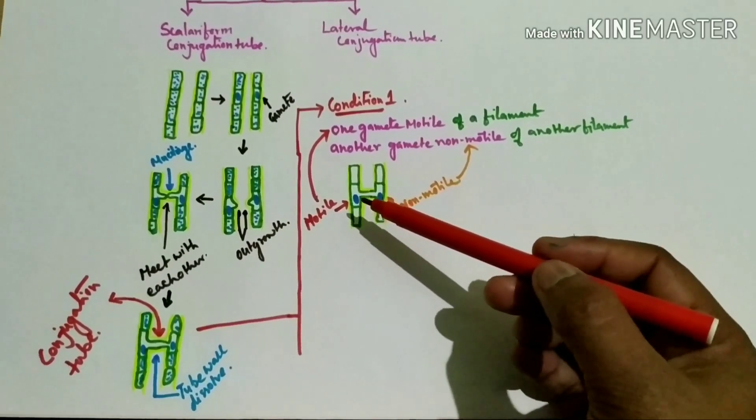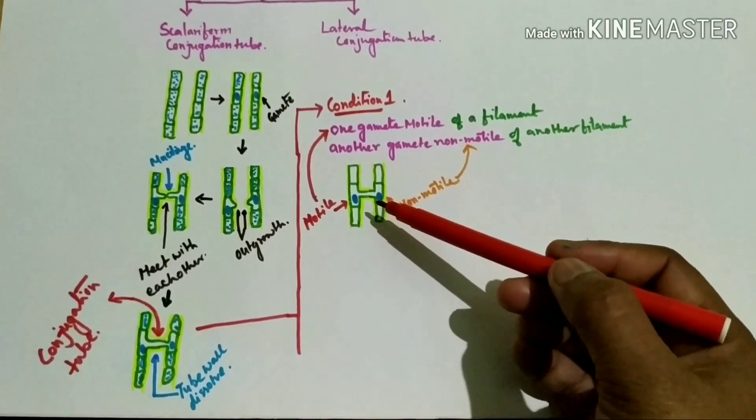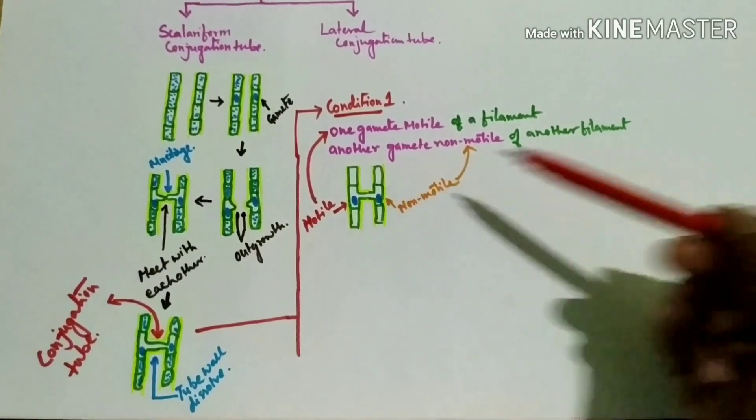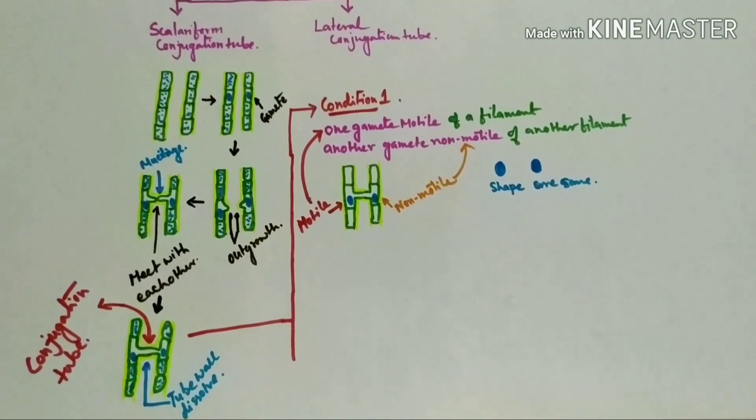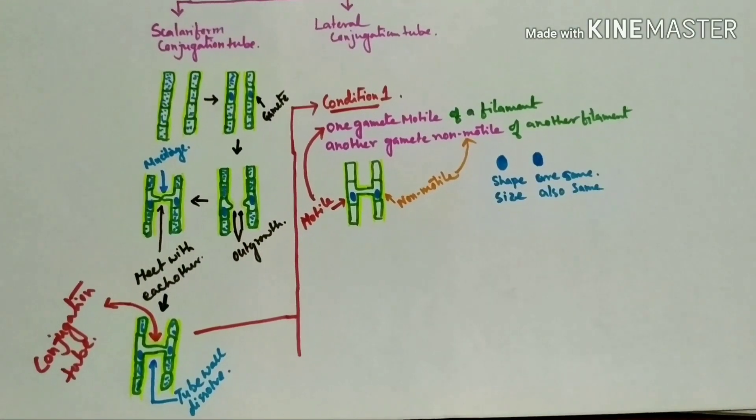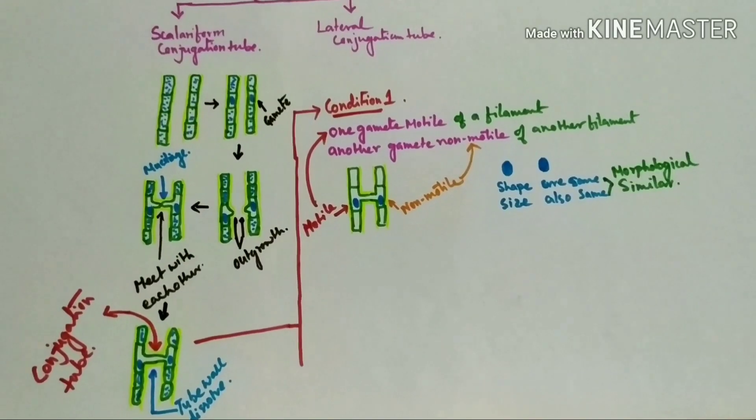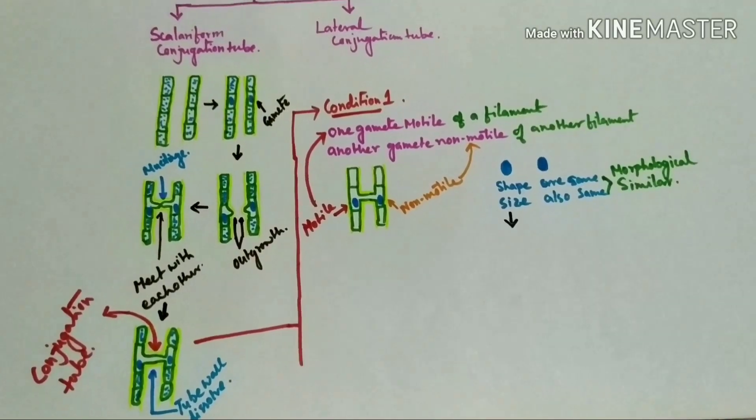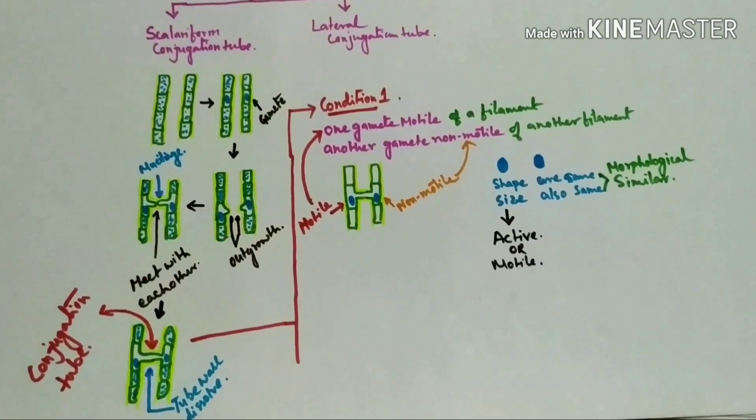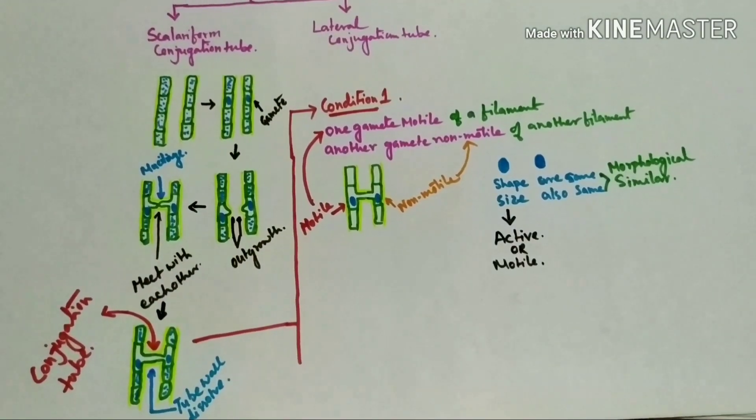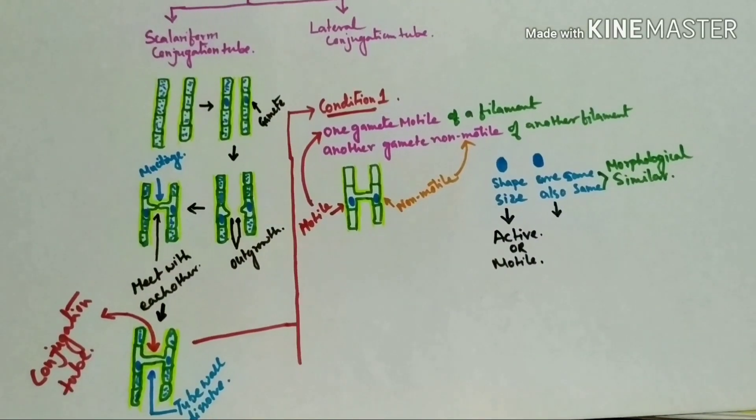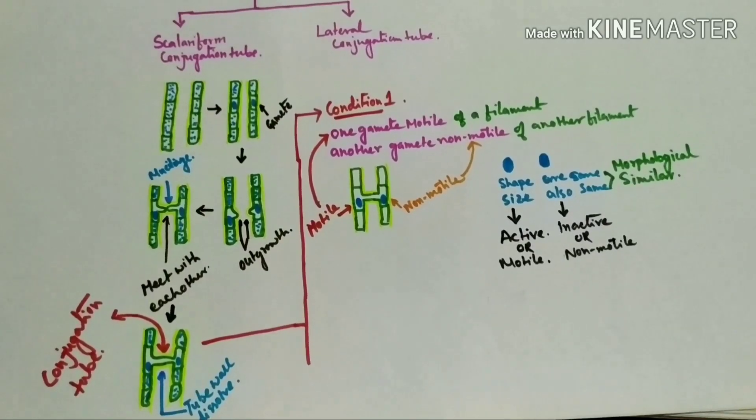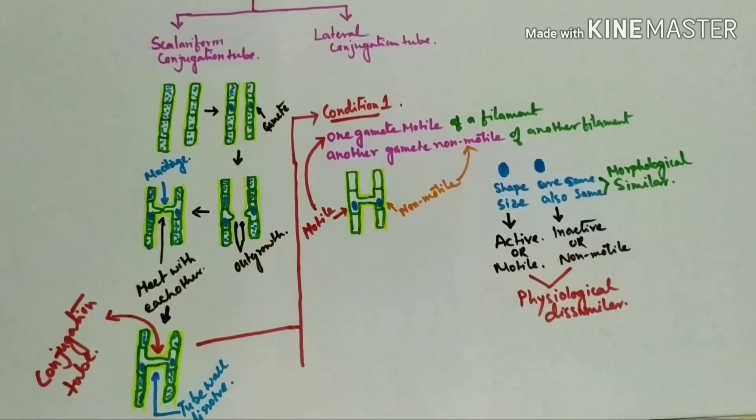So this is morphologically similar but physiologically dissimilar. Shape is same, size is also same. This is morphologically similar, but this gamete is active or motile and this gamete is inactive or non-motile. So here these are physiologically dissimilar.